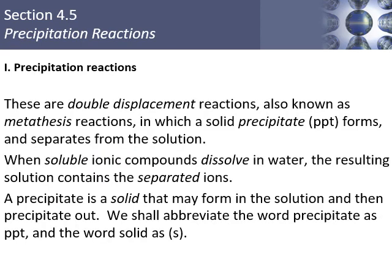Precipitation reactions are also called double displacement or metathesis reactions. You react two solutions — like salt water — and what happens is that when components from each solution bump into each other, one combination sticks together and falls out of solution. That's called making a precipitate.